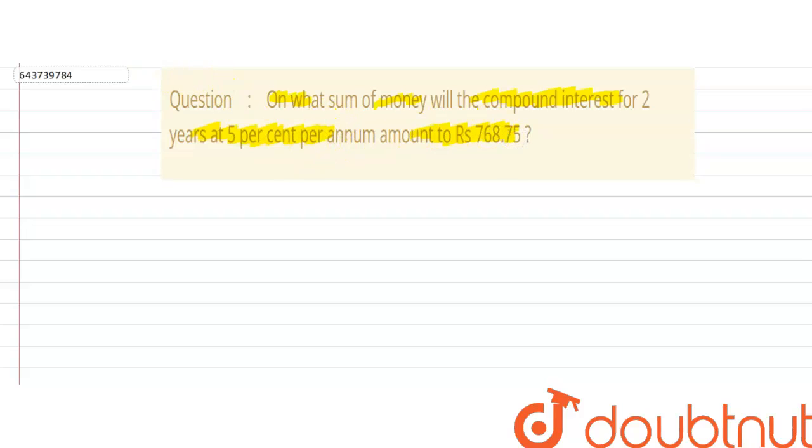We start this question by writing as we know that amount of a compound interest is given by P into 1 plus r by 100 to the power n.